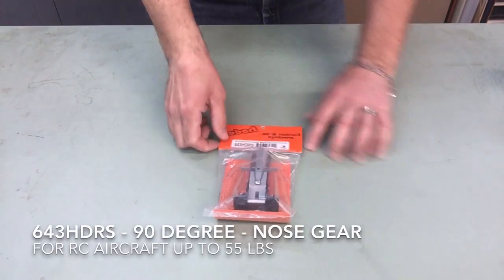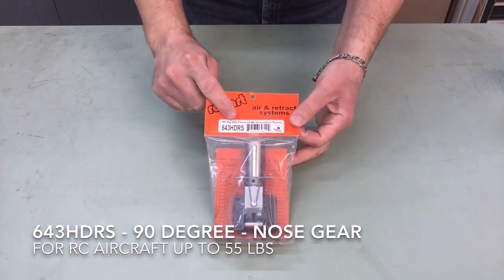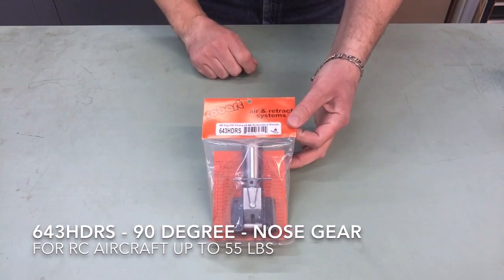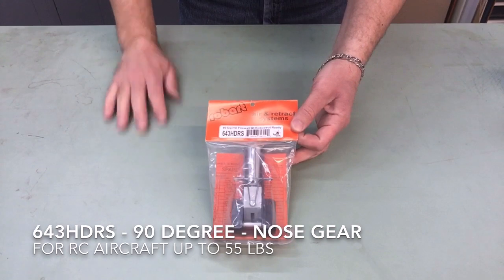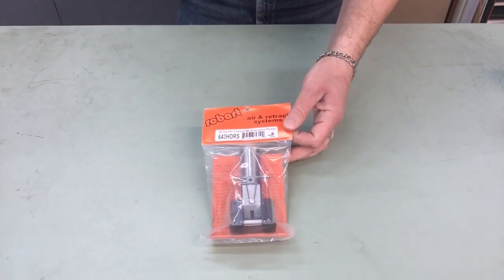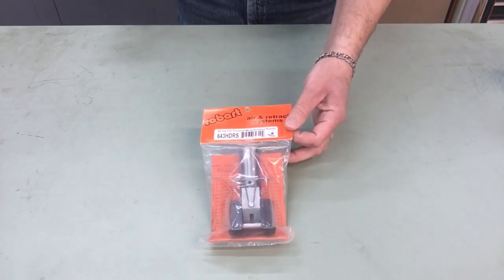So what we have here is part number 643 HDRS. This is a pneumatic nose gear and let's go ahead and open this up so you can see everything just a little bit better.